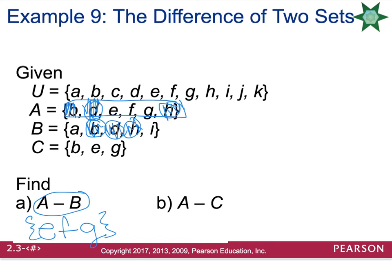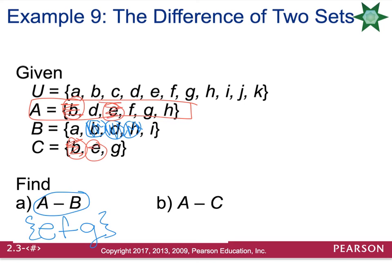We could also do the difference of A and C. Start with set A and take away anything that also happens to be in set C. B is in both sets, so remove it. E is in both sets, so remove it. G is in both sets, so remove it. The difference of A and C would be {D, F, H}.